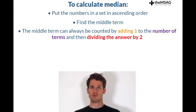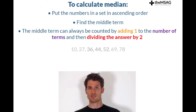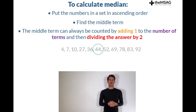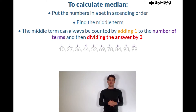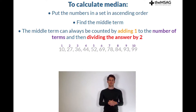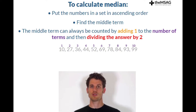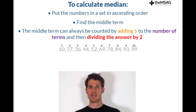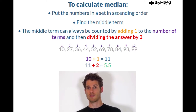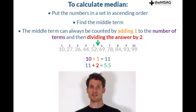In a list with an odd number of terms — for example 3 terms, 7 terms, 19 terms and so on — there will be a single straightforward middle term. In a list with an even number of terms — for example 4 terms, 10 terms — the middle term will always be halfway between two other terms. For example, in a list of 10 terms: 10 plus 1 equals 11, and 11 divided by 2 equals 5.5, meaning halfway between the fifth and the sixth terms.